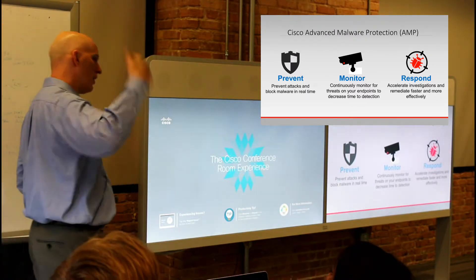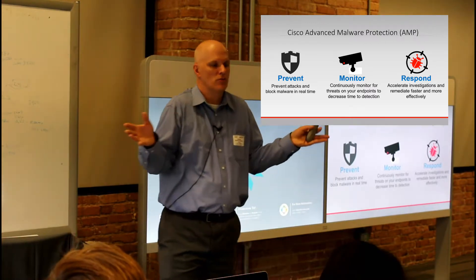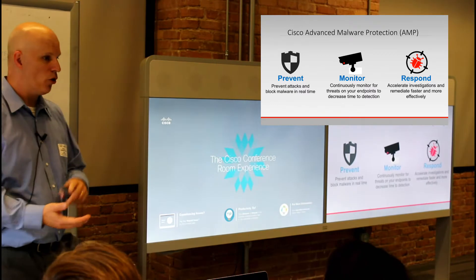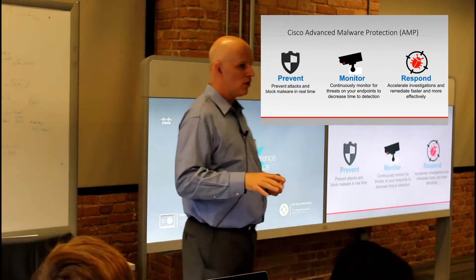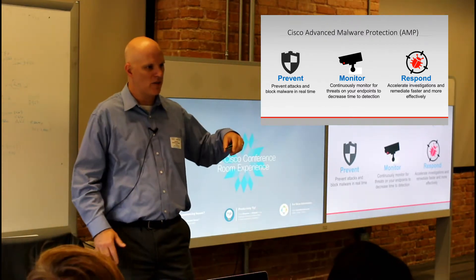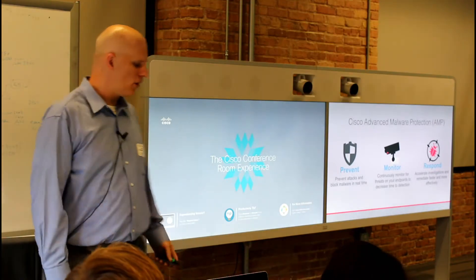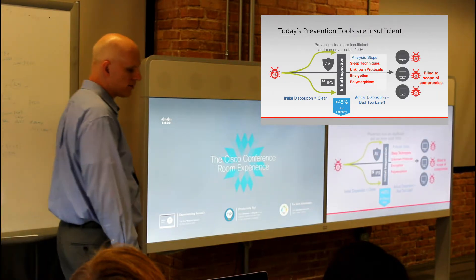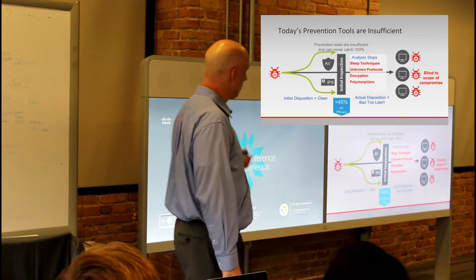If the file's disposition is still unknown, it can be sent up to Threat Grid, which takes the file apart to determine if it's good or bad, then reports that back to the AMP cloud. The next person on the planet who uses AMP technology and looks up that file gets the benefit of that work already being done. Think of that as a technology platform more than just a product.